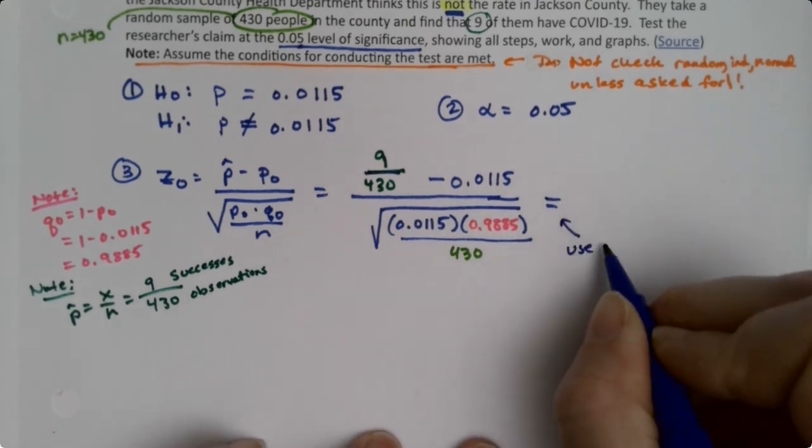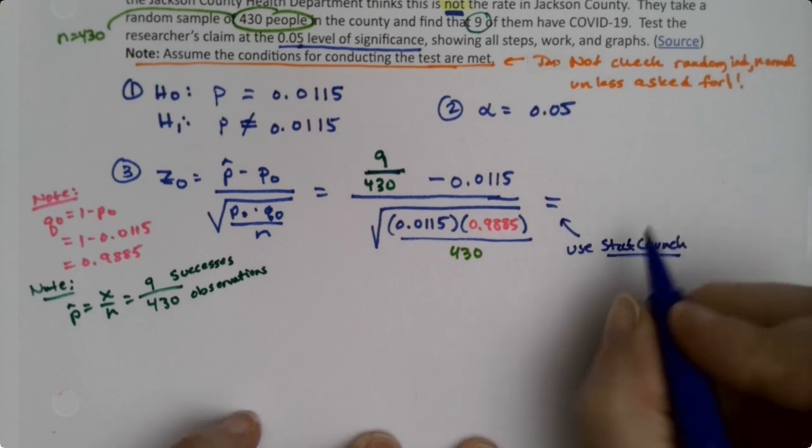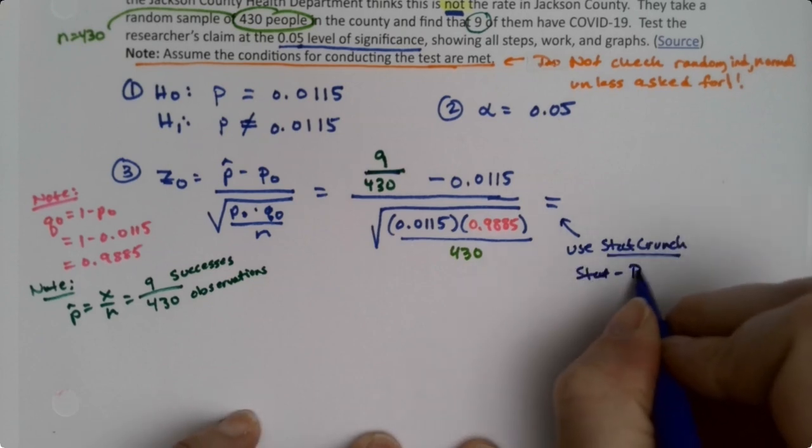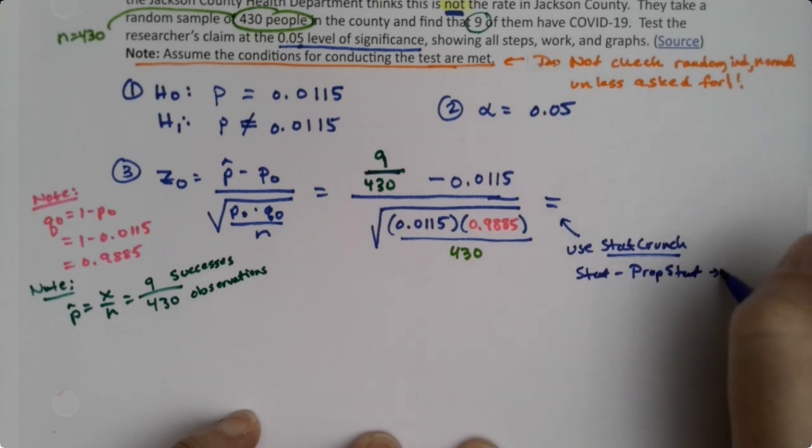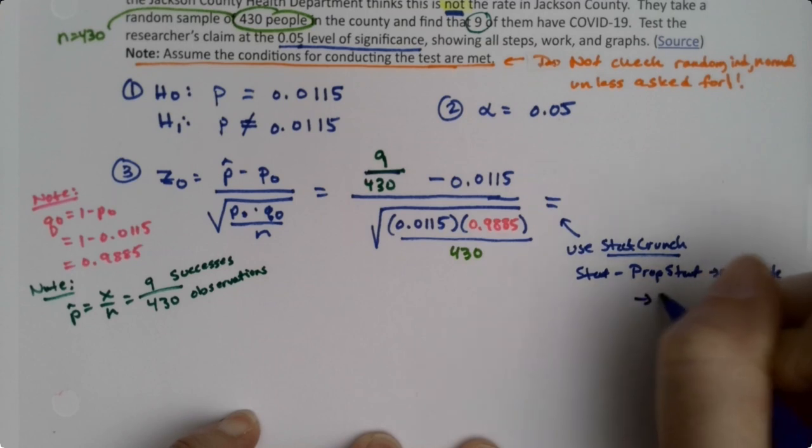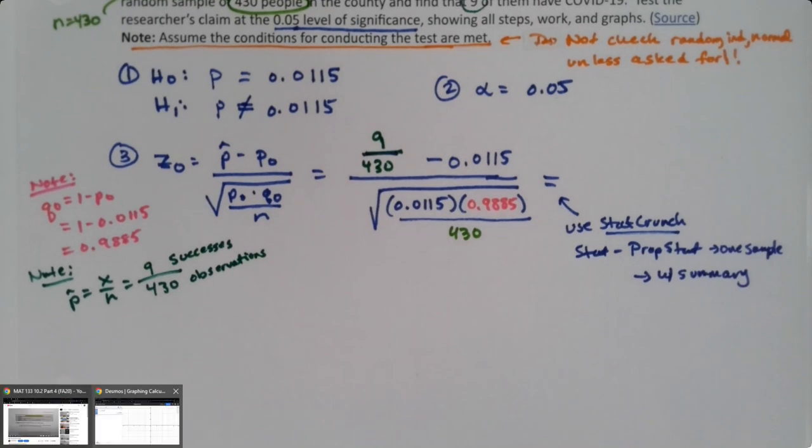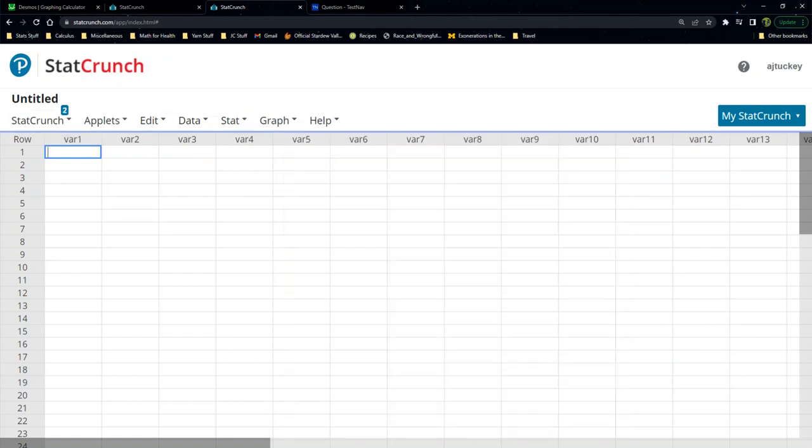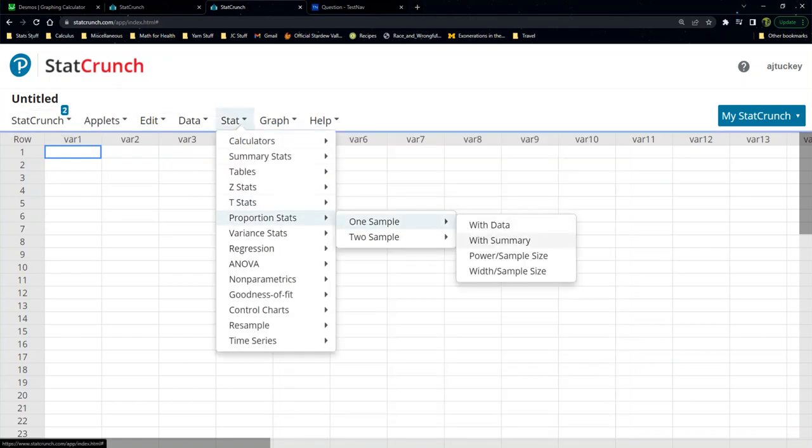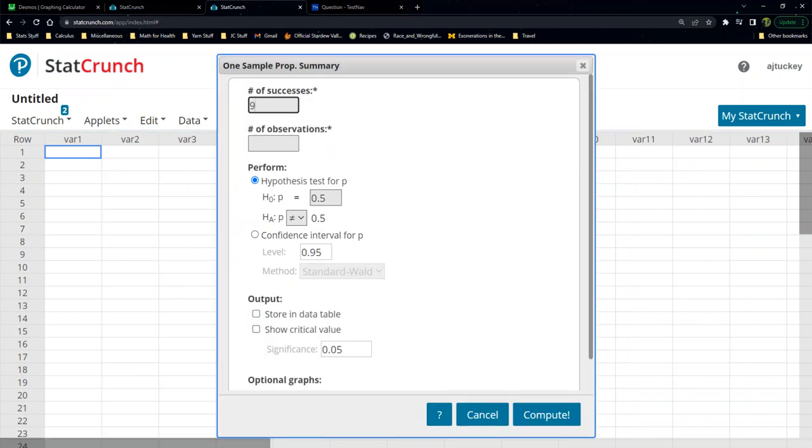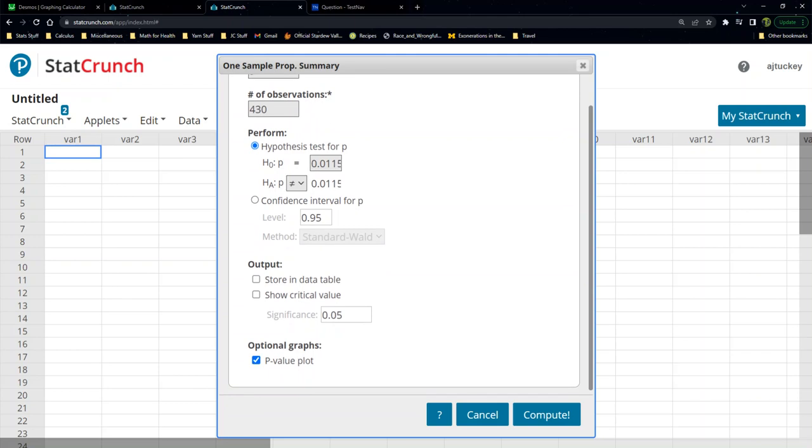At this point, I'm entirely done with all the by-hand stuff. Step three is the worst part because you've got to find your q0, figure out your p-hat, do all this work, but at this point use StatCrunch. We're going to use Stat, Proportion, Stat, One Sample, With Summary. Let me grab StatCrunch. This is going to be an easier problem for us because it gave us x to begin with, so we don't have to go find it. We know our number of successes: we had 9 people that were positive for COVID. We had 430 total. We know our null hypothesis is 0.0115, and then we wanted the not equal to. Don't forget to click your little p-value plot—scroll down and click that box because that makes step four done—and then click Compute.